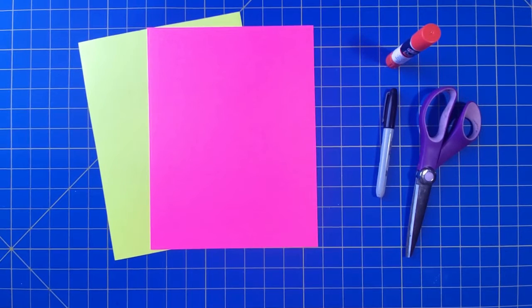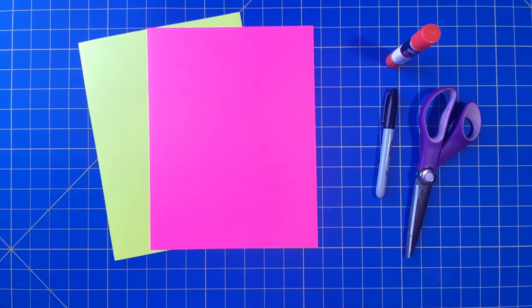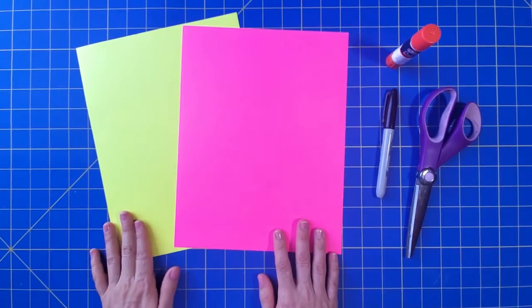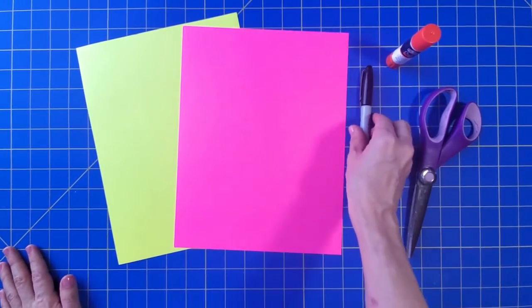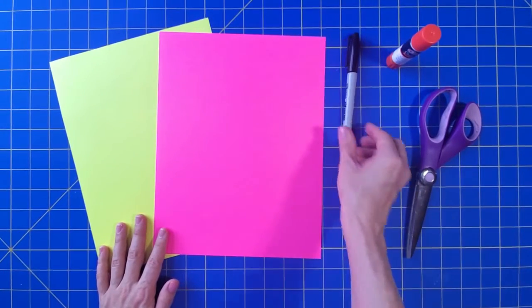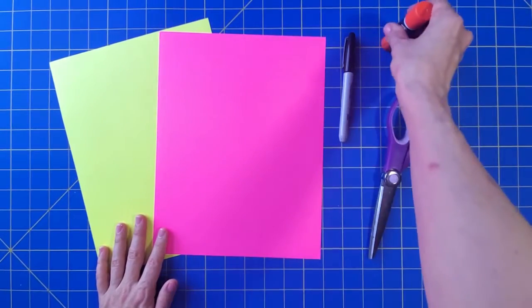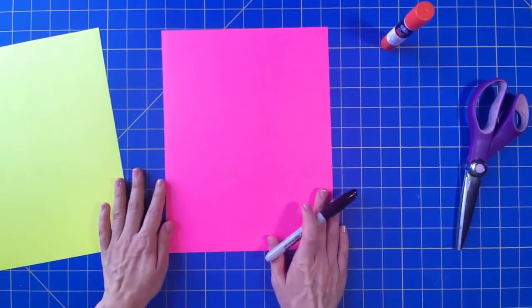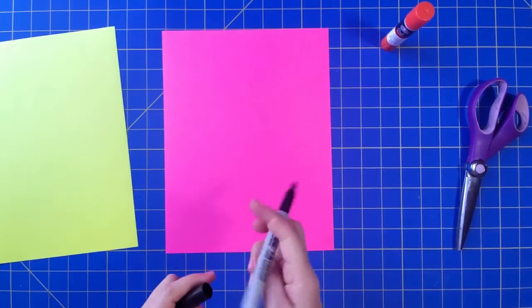It's Mindy here to show you how to make a cut paper flamingo. Supplies you're going to need include two pieces of paper, one in pink and one in yellow, a black marker (I'm using a Sharpie but you don't have to, you can use Crayola or anything you have), scissors, and a glue stick. We're going to start with the piece of pink paper and your black marker.